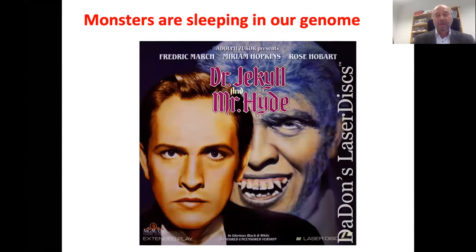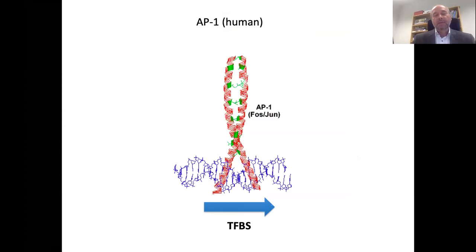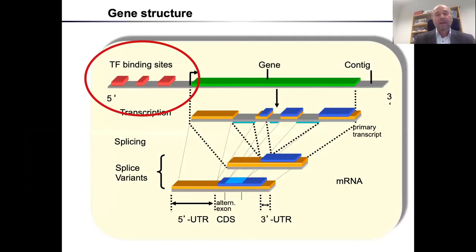Looking at the units of the regulatory code, we should talk about transcription factors and their binding sites. Here is an example of transcription factor AP1 — a small protein in the nucleus that binds to its binding sites in the genome. This is the initial event of any gene regulation. Those binding sites are usually located in so-called promoter regions of genes in front of the transcription start site, and some are in introns or enhancers.